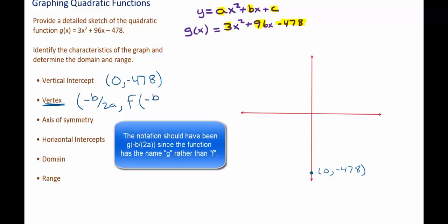This notation, f of negative b over 2a, is just the notation that says exactly that. To find the y value, we plug the x value into the function. So I'm going to do this both on my calculator and by hand.